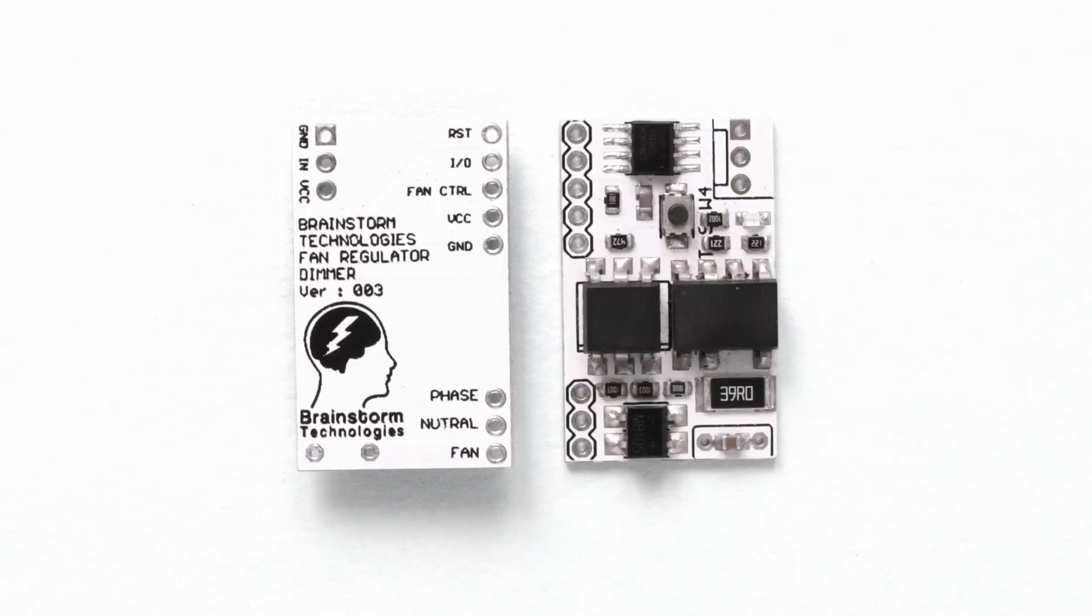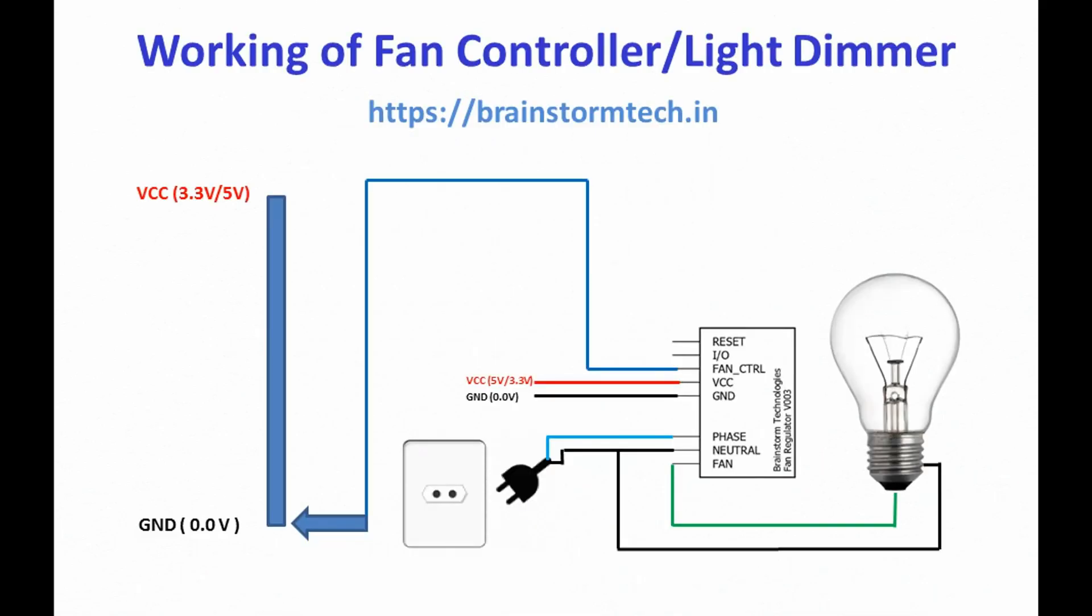It's very easy to use this module. You will be able to control the fan or light dimming just by changing the voltage on the control pin. If you are using VCC as 3.3 volt then you have to vary the voltage from 0 to 3.3 volt, and if you are using 5 volt as VCC you have to vary the control voltage from 0 to 5 volt.